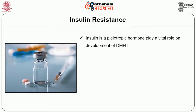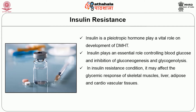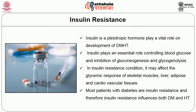The third factor is insulin resistance. Insulin is a pleiotropic hormone which plays a vital role in the development of diabetes mellitus and hypertension. Insulin plays an essential role in controlling blood glucose and inhibition of gluconeogenesis and glycogenolysis. In an insulin resistance condition, it may affect the glycemic response of skeletal muscles, liver, adipose, and cardiovascular tissues. Most patients with diabetes are insulin resistant, and therefore insulin resistance influences both diabetes mellitus and hypertension.